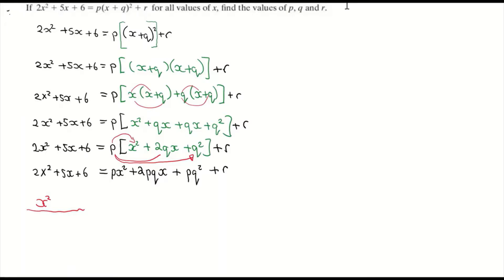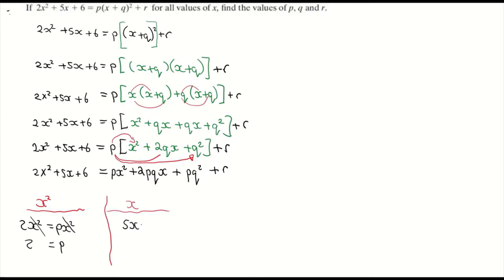Looking at the x² terms: 2x² = px². Dividing both sides by x² gives p = 2. That's our first value. Now moving to the degree-one terms: 5x = 2pqx.